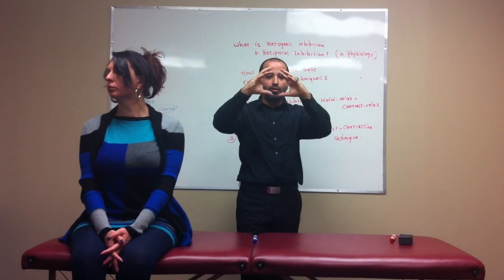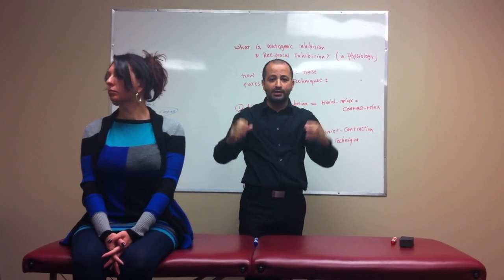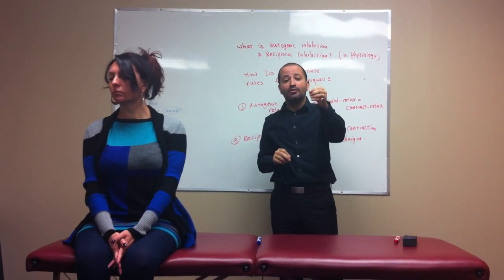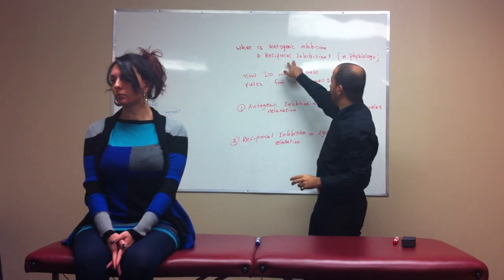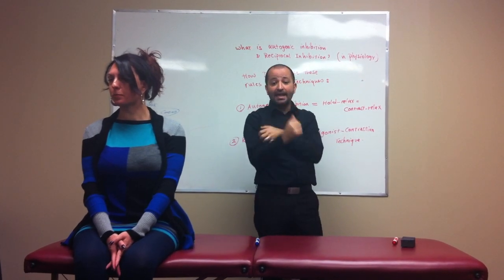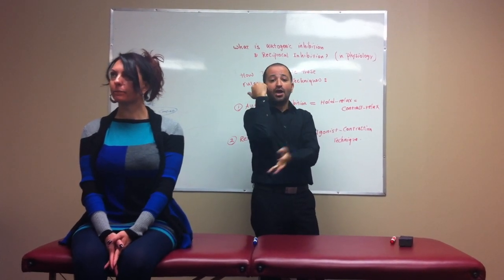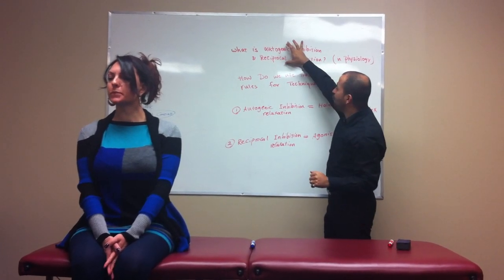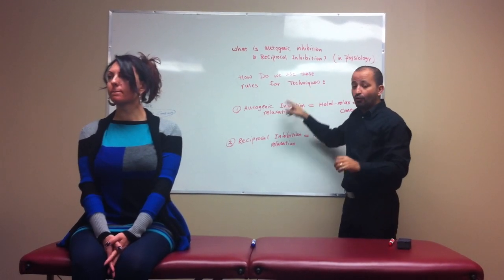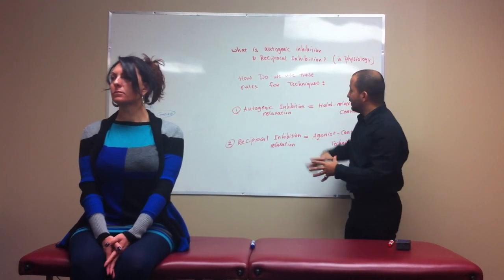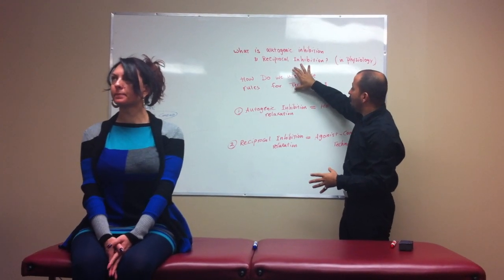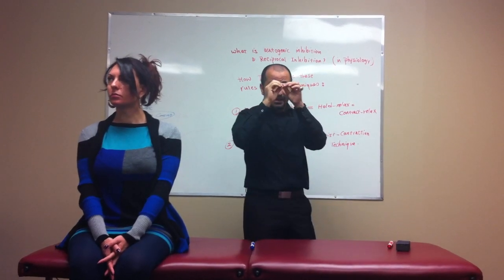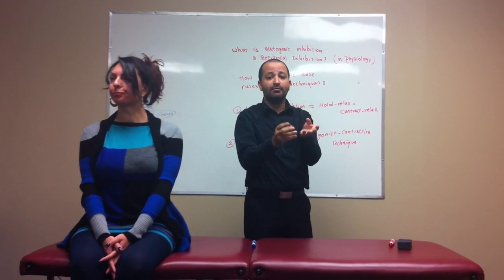So we've learned these two physiological points. One is autogenic inhibition — stimulation of the GTO will relax the same muscle. The second is reciprocal inhibition — any muscle that gets contracted causes the opposite muscle to relax. Now how do we use these for techniques? How do we use autogenic inhibition? Remember, Golgi tendon organ stimulation will relax the same muscle.